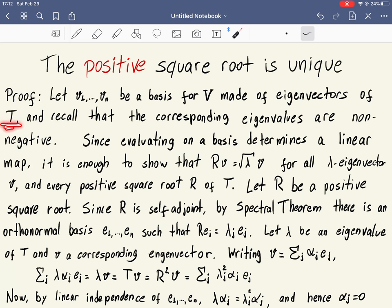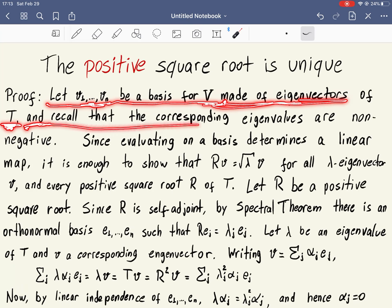We know that T is self-adjoint, therefore it is diagonalizable. So we can say that V1 to Vn be a basis for V made of eigenvectors. That means exactly a basis that diagonalizes T. And recall that we're assuming that T is a positive self-adjoint operator. So the corresponding eigenvalues, we have proved this in the exercise before, are non-negative. Of course, they are all non-negative. That's how we showed unique existence also in the previous slide.